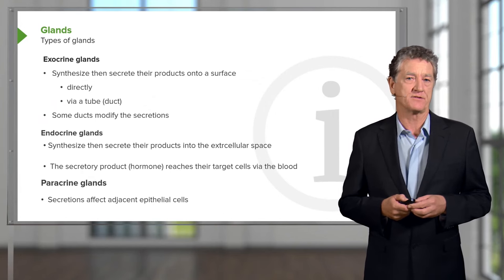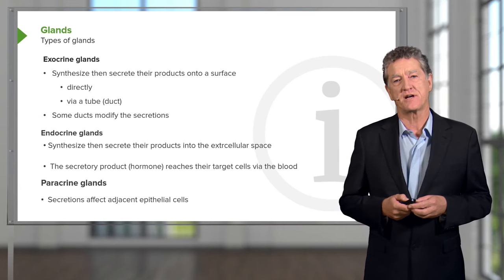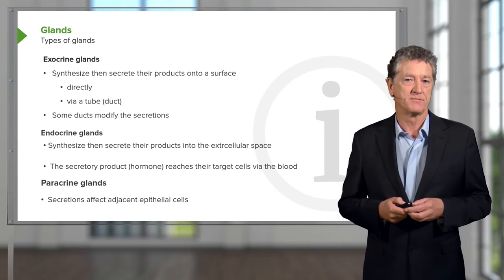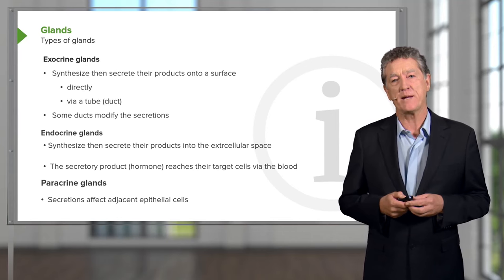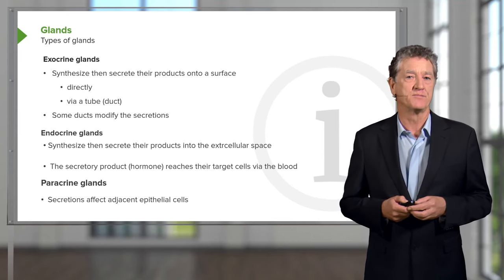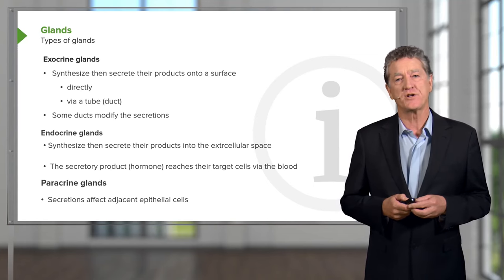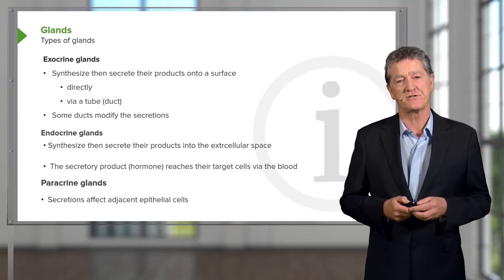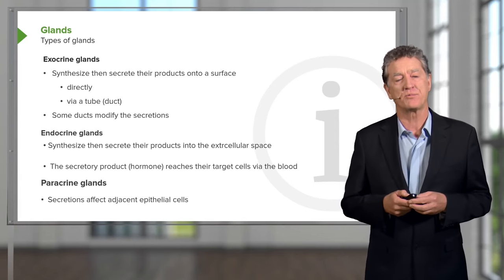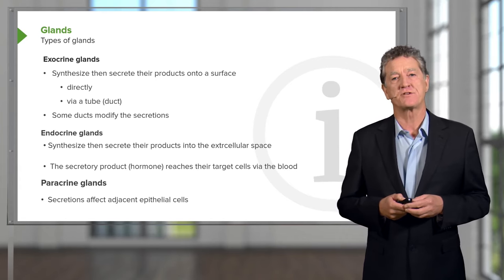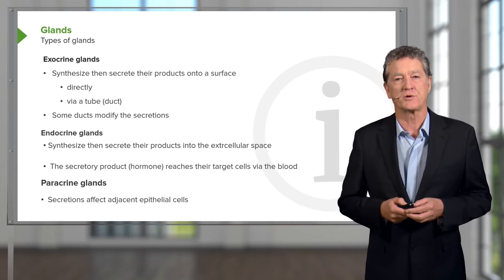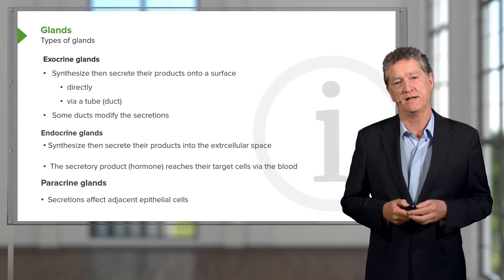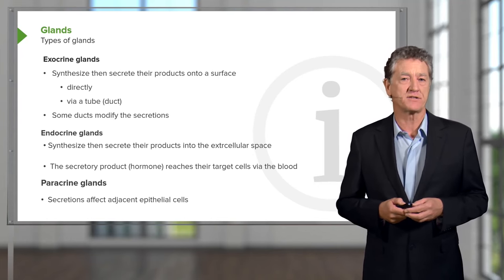There are also endocrine glands. These are glands that synthesize their products but then secrete them into the extracellular space around the glands. During development, when the epithelium invaginated into underlying connective tissue, the connection between the surface of the epithelium and the secretory invaginated epithelial cells is lost. So there is nowhere for these glands to secrete their products — they secrete them into extracellular space, and those secretory products move into the bloodstream and are delivered to target organs, often a long way away from where these glands synthesized the material.